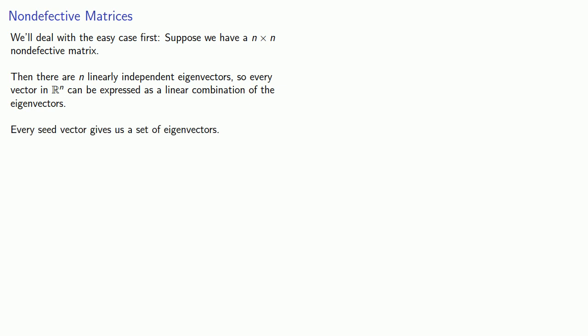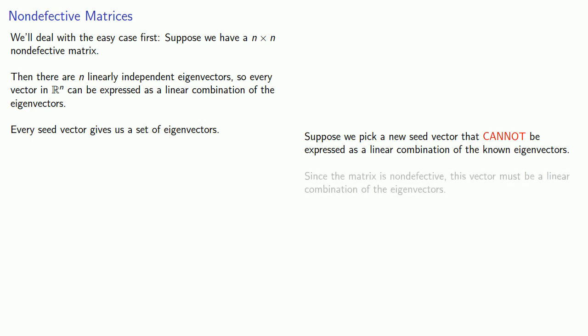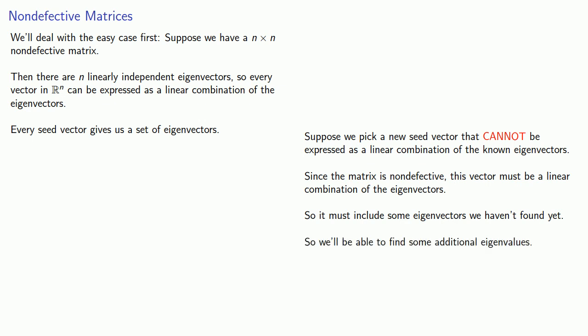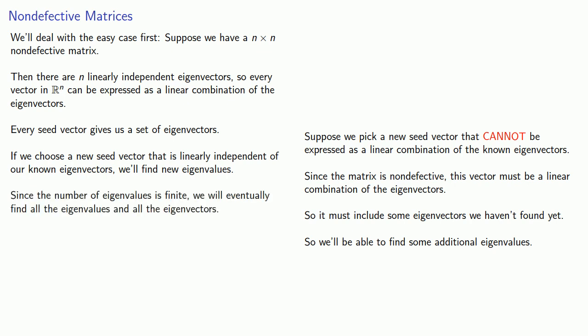Now, since we know how many linearly independent eigenvectors we're supposed to get, we can just check to see if we have found them all. And if we haven't, well, let's pick a new seed vector that cannot be expressed as a linear combination of the known eigenvectors. Again, since our matrix is non-defective, this vector that we've picked must still be a linear combination of the eigenvectors. And this means it must include some of the eigenvectors we haven't found yet. And that means we'll be able to find some additional eigenvalues. And since the number of eigenvalues is finite, we'll eventually find all of the eigenvalues and all of the eigenvectors.